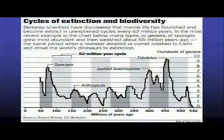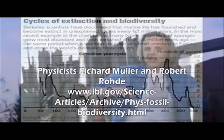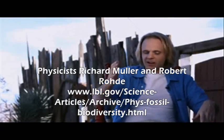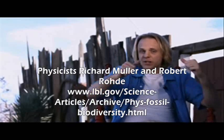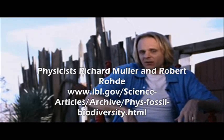When you look again at the 62 million year cycle discovered by Drs. Mueller and Rohde, you're seeing the actual signatures of these galactic energy waves rippling through the solar system, colliding with our Earth, and reprogramming the DNA on the Earth.